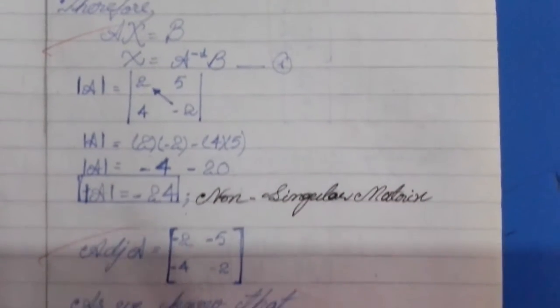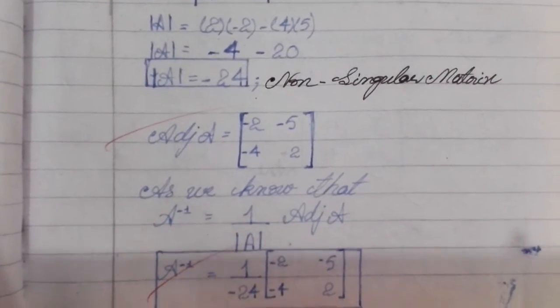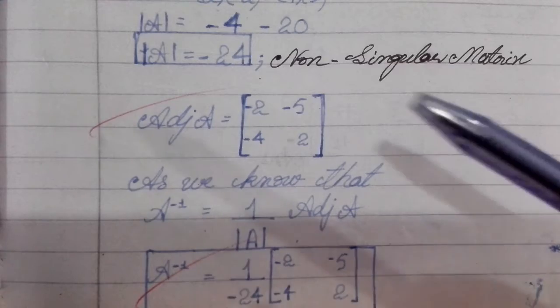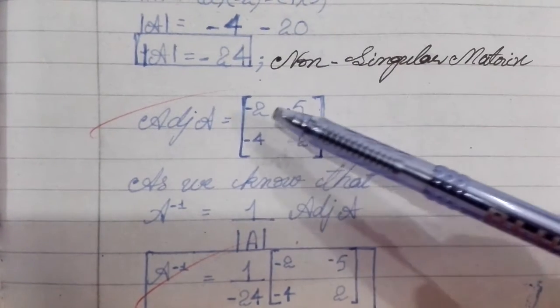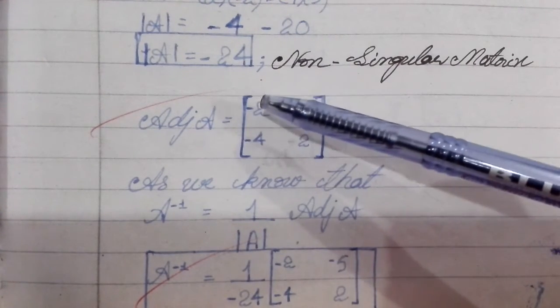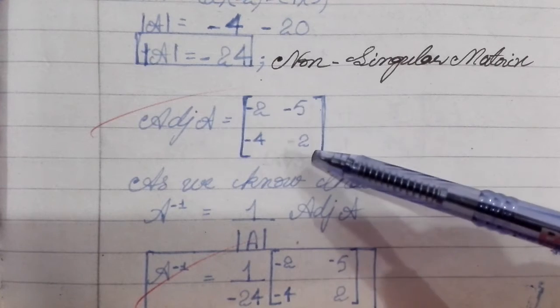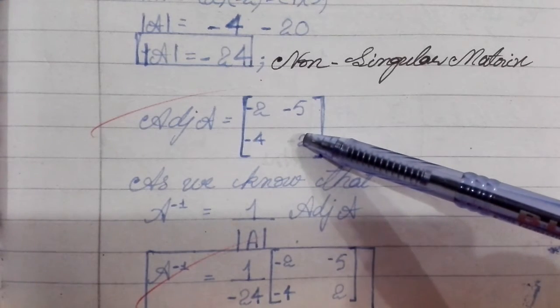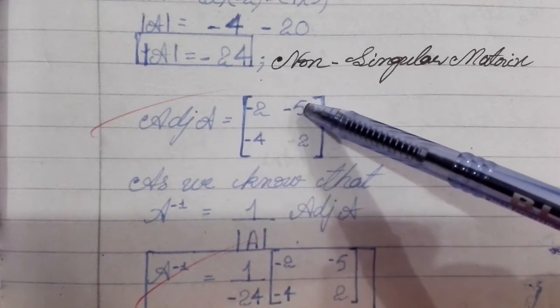Now, we will find the adjoint. We will change the corresponding diagonal positions and change the signs of the off-diagonal elements.